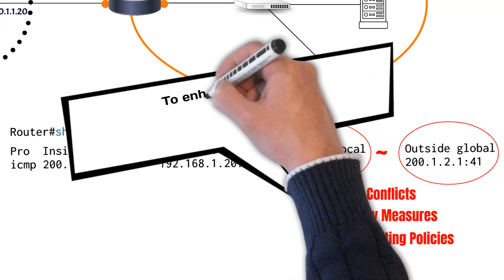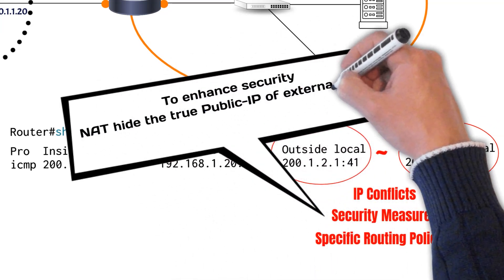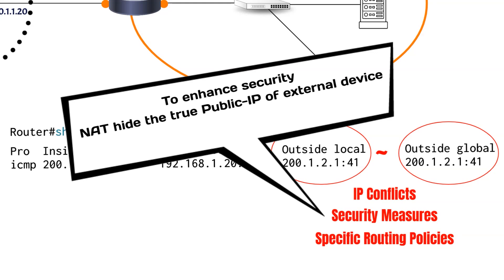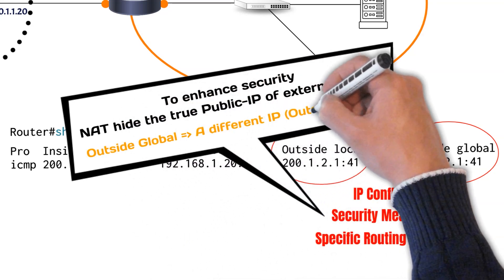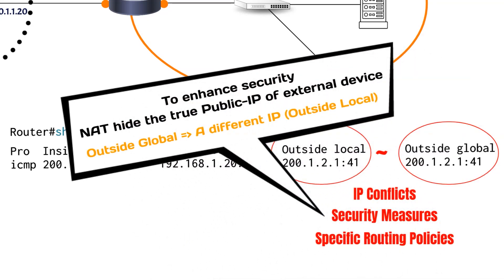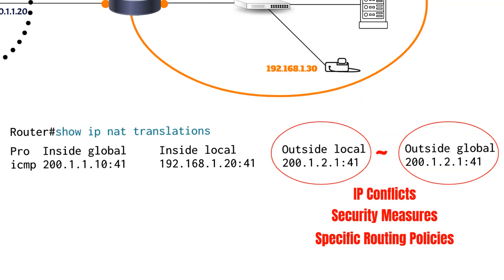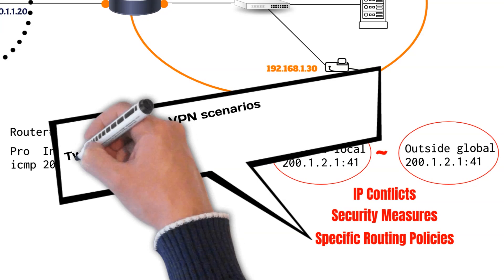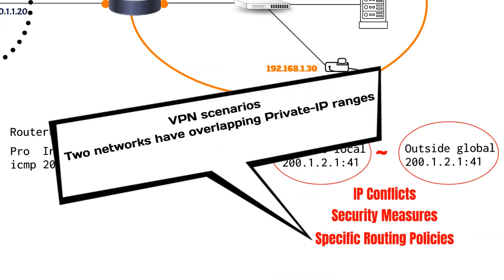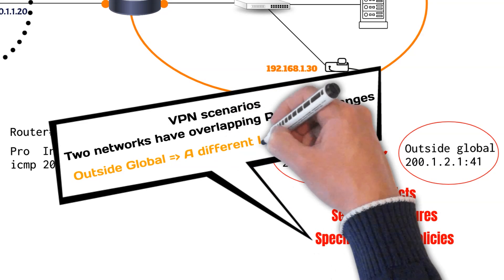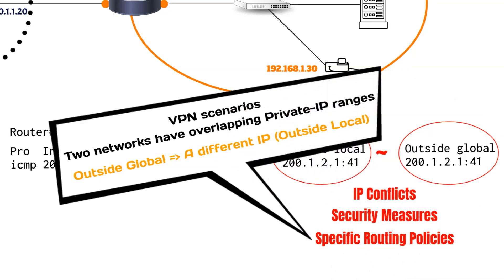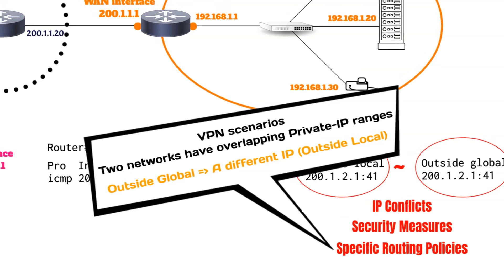Moreover, to enhance security, NAT can hide the true public IP of external servers by translating the outside global address to a different outside local address. Lastly, in the context of VPNs where two networks have overlapping private IP ranges, NAT can resolve conflicts by translating the outside global IP to a different outside local IP, avoiding IP conflicts between the two networks.